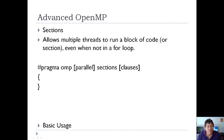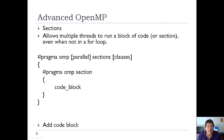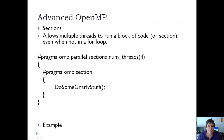Sections allow multiple threads to run a block of code, or section, even when they're not in a for loop. Here's the general syntax: pragma OMP, and normally you're going to say parallel, though you don't have to, then sections, and then any clauses you might want to add. Within that, you tell it whatever section you've got — pragma OMP section — and then there's some code within that section. You can have multiple code blocks. Here's a real implementation: pragma OMP parallel sections with num_threads set to 4, then within that, pragma OMP section, calling the gnarly function four times in parallel.